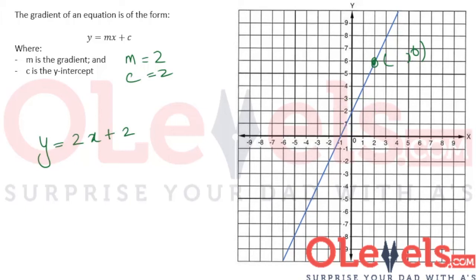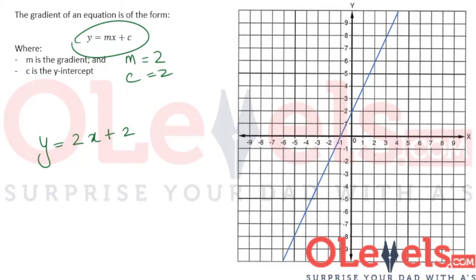To recap: first we found the gradient and found a value of 2, so in the equation we put 2 instead of m. After that, we plugged in any one point of the line and made c the subject to find the value of the y-intercept. When we had the gradient and the y-intercept, we simply put their respective values into the standard form, and that gave us the equation of this line.